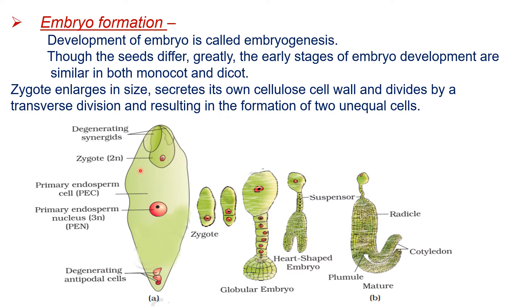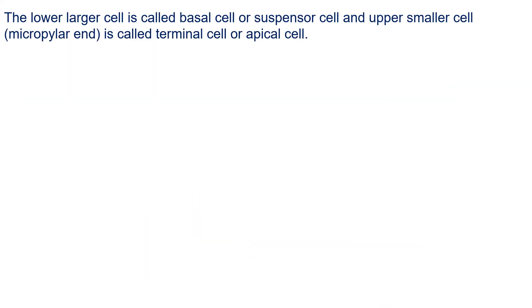During development, first of all the zygote enlarges in size, secretes its own cellulose cell wall, and divides by a transverse division, resulting in the formation of two unequal cells. The zygote, which is 2N, divides in the transverse plane and divides into two unequal cells.